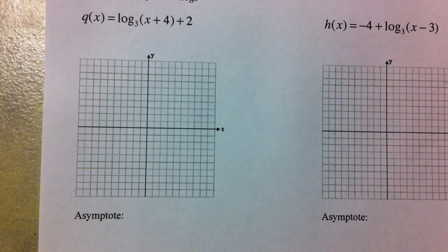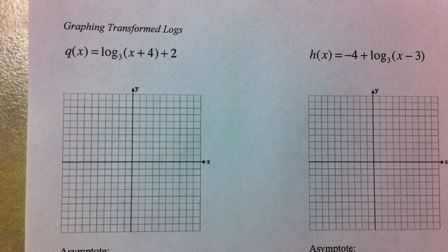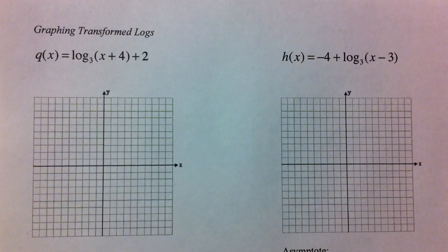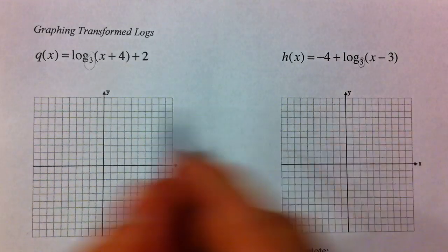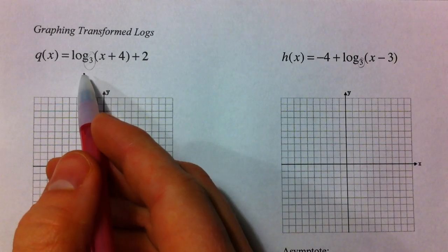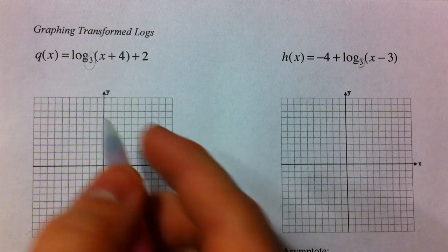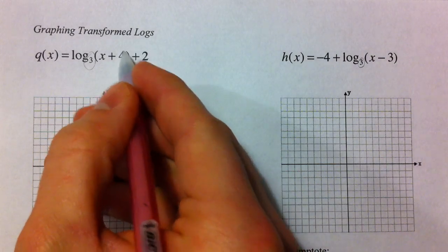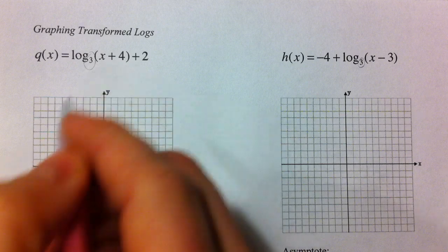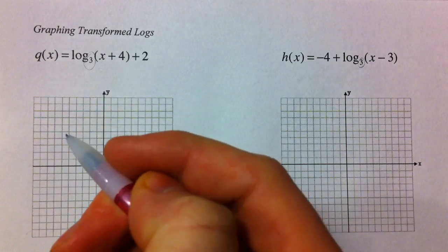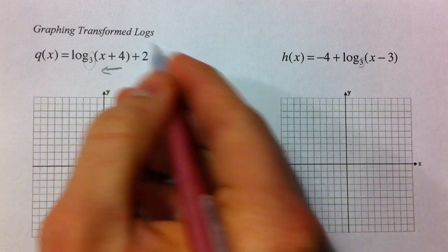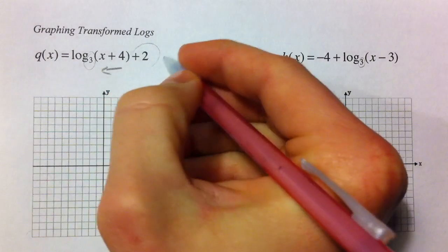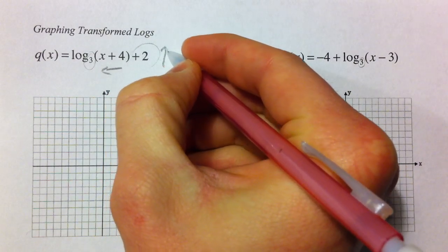Now let's talk about some more transformed ones, kind of like we did prior. This log base 3, just like the base of the exponent and this log base 3, are not really going to have much of an impact. Plus 4 is inside with the x, and so that shifts it opposite of what we think it should do, so that's going to shift it left 4. This plus 2 is going to shift it up 2.